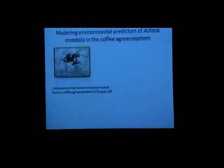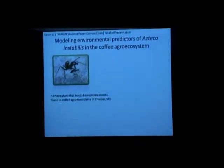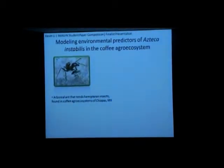We're going to switch from Native Americans to ants in Mexico. The title of my paper is 'Modeling Environmental Predictors of Azteca Instabilis in the Coffee Agroecosystem.' The picture shown is my study organism, Azteca Instabilis, an arboreal ant that tends hemipteran insects, also known as scale insects. This ant is found in the agroecosystems of Chiapas, Mexico.